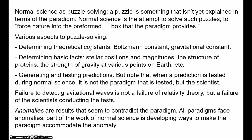Some of the puzzles that scientists work on in normal science are anomalies — results that seem to contradict the assumptions of the paradigm. All paradigms face anomalies; there will always be some phenomena that don't fit well with our theories. Part of the work of normal science is resolving these anomalies, coming up with ways to make the paradigm accommodate the phenomena. In the last video, I gave the example of the orbit of Uranus: the orbit showed certain discrepancies from the predictions of Newtonian mechanics and therefore constituted an anomaly for that paradigm. The anomaly was resolved by the postulation of an eighth planet, which was later confirmed.